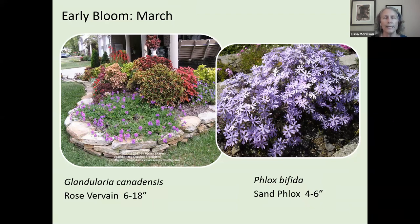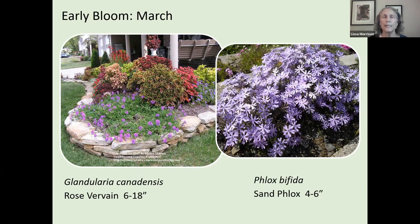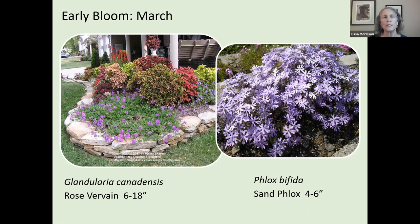Sand phlox has similar requirements to creeping phlox (Phlox subulata), which everyone sees blooming right now. However, creeping phlox is native to the Great Lakes region, not our area, so it is probably not a host plant here. Sand phlox is native to our region and is one of the earlier blooming native phloxes, making it a good substitute for creeping phlox.